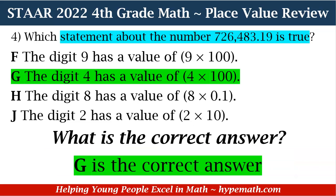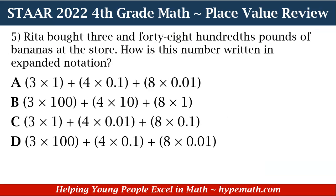The digit 4 has a value of 4 times 100 — and you see how we went through the steps to solve the problem for ourselves, then compared the answers and got the correct answer. Now let's move to question number five. Rita bought three and 48 hundredths pounds of bananas at the store. How is this number written in expanded notation?